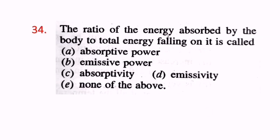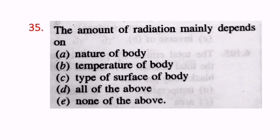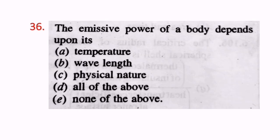Question 34: The ratio of the energy absorbed by the body to total energy falling on it is called absorptive power. Question 35: The amount of radiation mainly depends on the nature of the body, temperature of the body, and type of surface — a black body will emit more radiation. Question 36: The emissive power of a body depends upon its temperature, wavelength and physical nature.